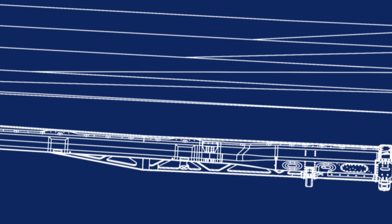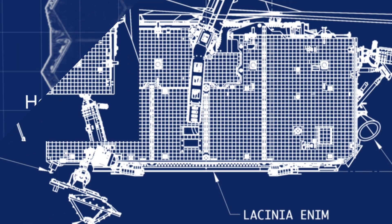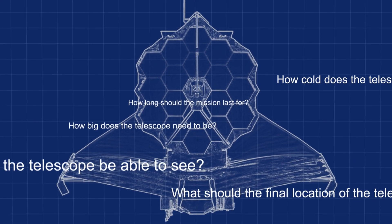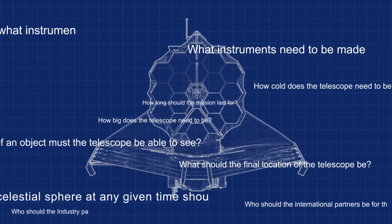Before any designs for Webb could be created, certain criteria needed to be established first. We had to figure out: number one, how big could it be? Number two, how cold should it be to achieve the scientific objectives? And number three, where to put it so that it could get that cold?